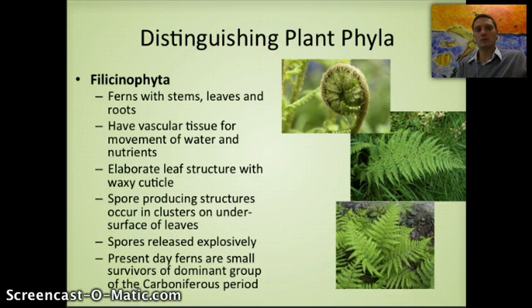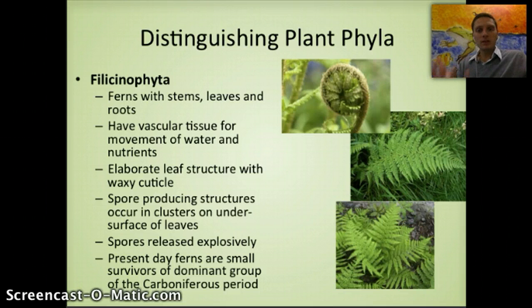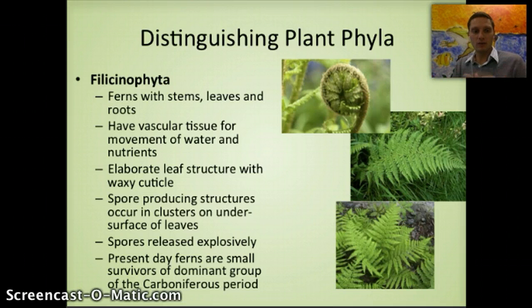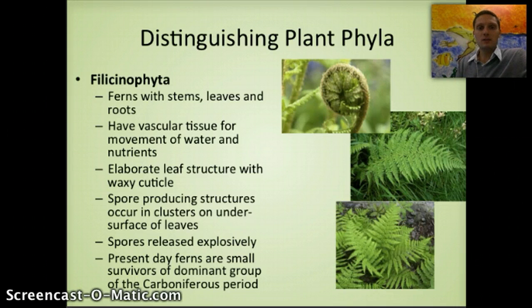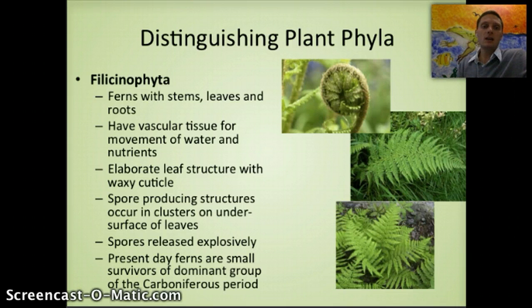The next plant phylum is Pteridophyta, which includes ferns with stems, leaves, and roots, and true vascular tissue for movement of water and nutrients. They have an elaborate leaf structure common in the Pacific Northwest. Spores are produced on the underside of leaves and are released explosively. Ferns have been around for a very long time — survivors of a dominant group present during the Carboniferous period.